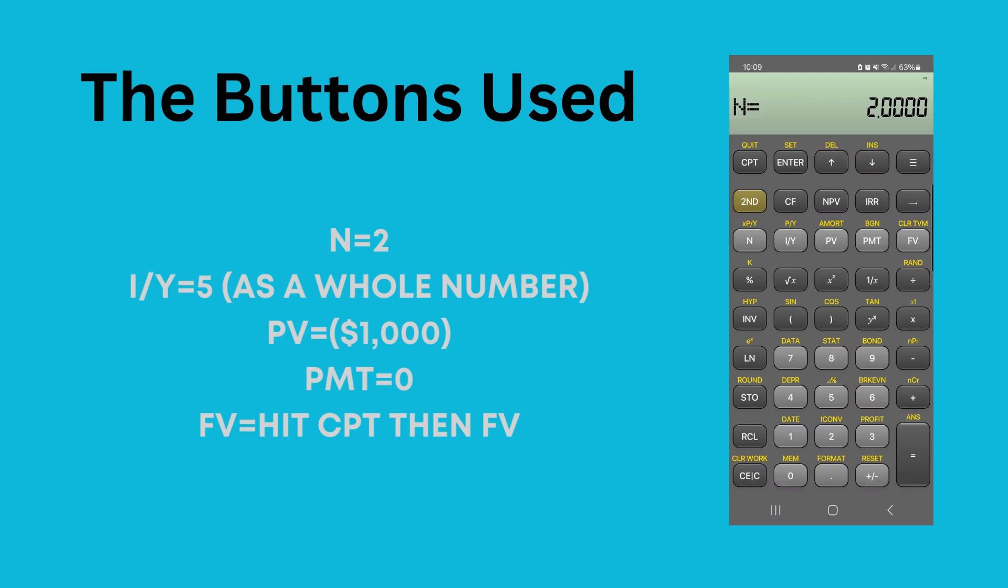Then our interest is 5%. So, we hit 5 and then IY. It's important to note here that you don't have to decimalize the interest. Don't put the interest as .05. The calculator automatically converts it for you. If you put it in as .05, you're going to get the wrong answer.